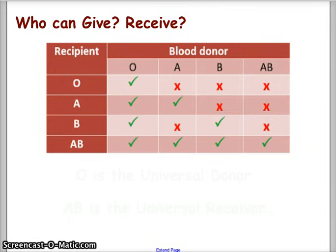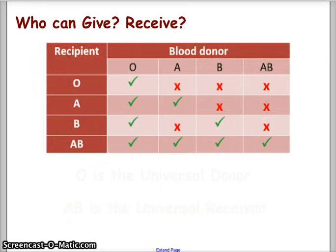O type blood can be given to an O person. A type blood can receive from an O and also from another A. B type blood can receive from an O type person and also a B type person. A B type person would not want to receive blood from an A donor, and an A type blood person would not receive from a B donor.